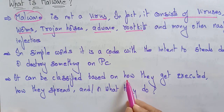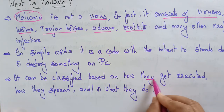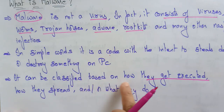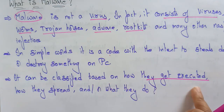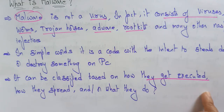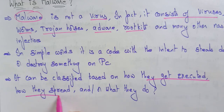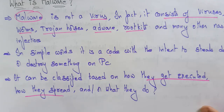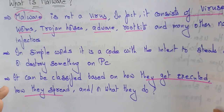Malware can be classified based on how they get executed — how those viruses, Trojan horses, adwares, and worms get executed in your system — how they spread from one system to another, and what they do in your system. So malware is classified based on: how they get executed, how they spread, and what they do.